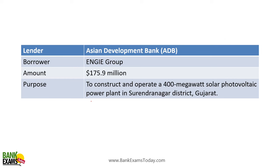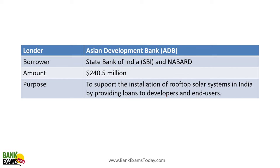Asian Development Bank — the borrower is Engie Group — loan amount is 175.9 million dollars to construct and operate a 400 megawatt solar photovoltaic power plant in Surendranagar district of Gujarat. ADB also lent to SBI and NABARD — 40.5 million dollars — to support installation of rooftop solar systems in India and to provide loans to developers and end users.